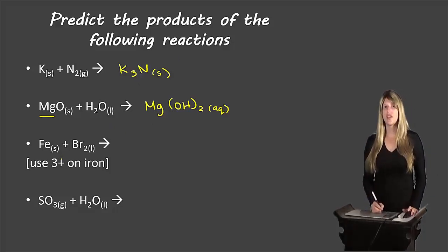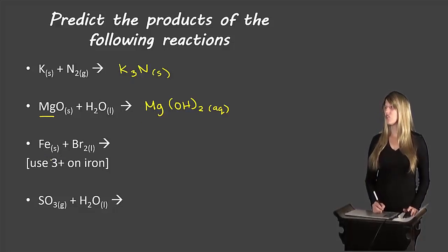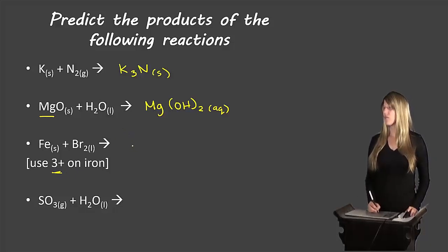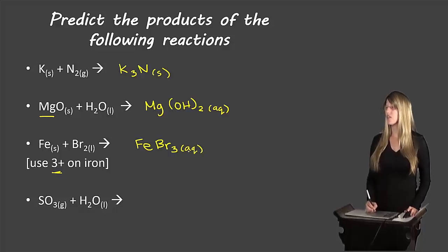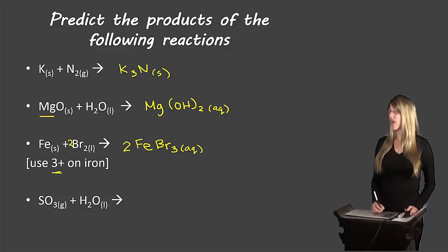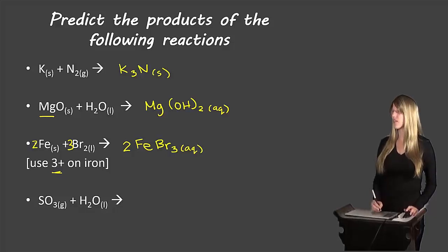Here we have a multivalent ion — iron can be 2+ or 3+. I've specified to use the 3+ charge, so iron and bromine come together to give FeBr3, an aqueous compound — iron(III) bromide. We then do a bit of balancing: we need 2 iron, 3 bromine molecules, and 2 FeBr3, giving us a balanced chemical equation.